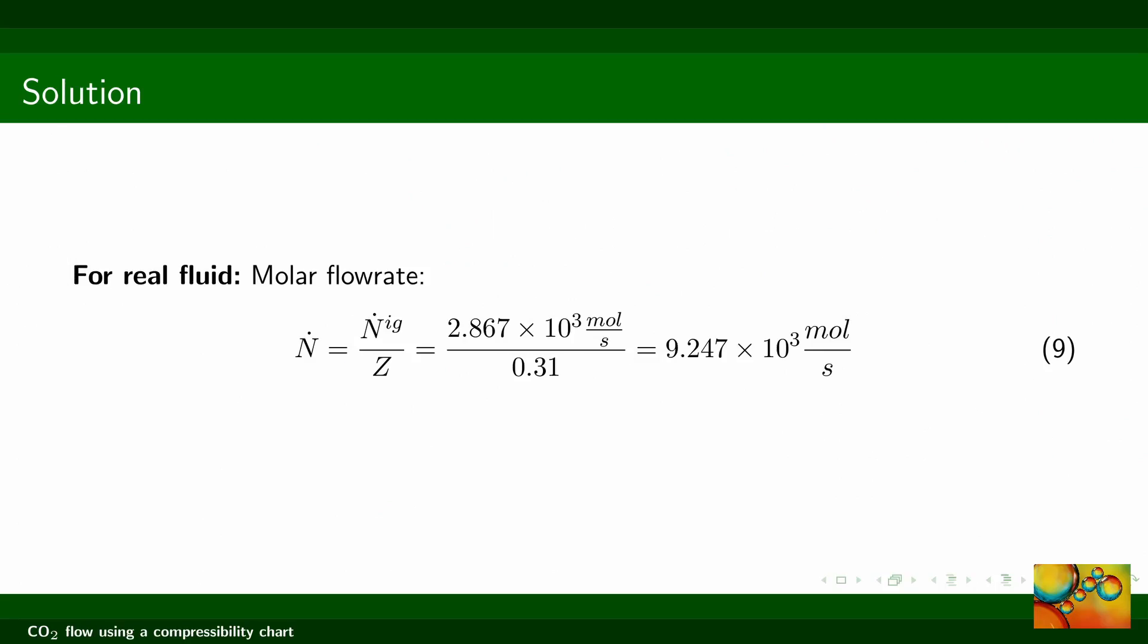Using this value for the compressibility factor, we find that the molar flow rate is equal to 9.247 times 10 to the power 3 moles per second.